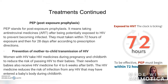PEP — post-exposure prophylaxis — involves taking antiretroviral medicines after potentially being exposed to HIV. It is crucial that PEP is taken within the first 72 hours of exposure and then continued for 28 days according to prescription directions. This helps control HIV mutations and prevent the infection from becoming worse.